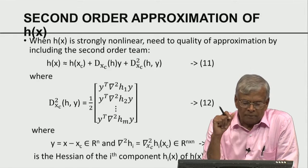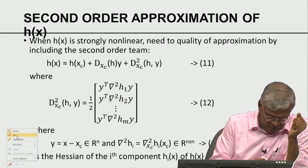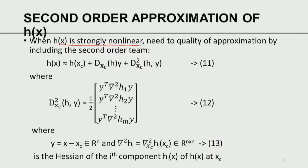Thus far we saw the first-order approximation. Now we go to the second-order approximation. If H of x is strongly nonlinear — involving logarithmic, exponential, trigonometric functions, or fractional powers — the first-order approximation has large errors. For example, in satellite meteorology, energy radiated equals alpha times T to the power 4, a very strongly nonlinear function where Z equals H(T) and T is the state variable. In such cases, the linear approximation is inadequate.